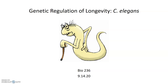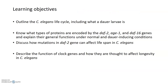This is the first part of a lecture on the genetic regulation of longevity in C. elegans from 9-14-2020. In the first part of this lecture, I'm going to outline the C. elegans lifecycle as well as talk about what dauer is. In the second part, we're going to talk about the DAF2 pathway and how mutations in DAF2 can affect lifespan in C. elegans. And in the last part, we're going to talk about what a clock gene is and how they're thought to affect longevity in C. elegans as well.